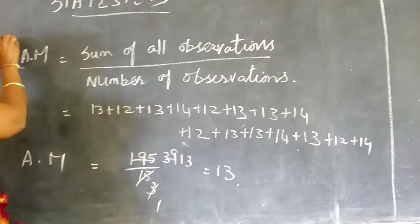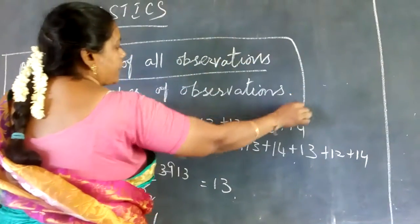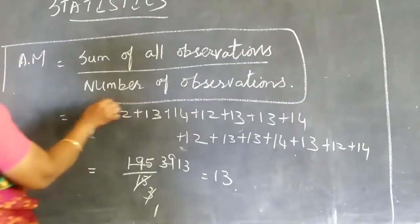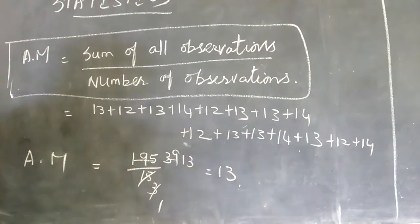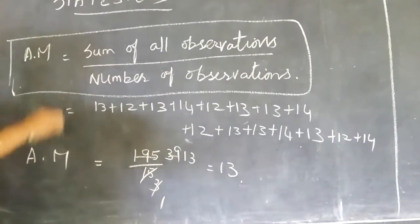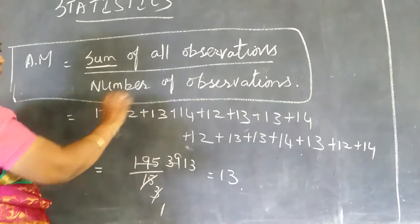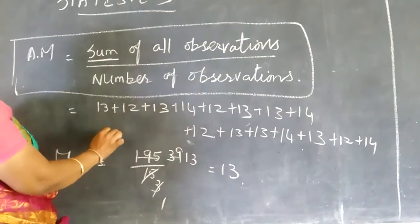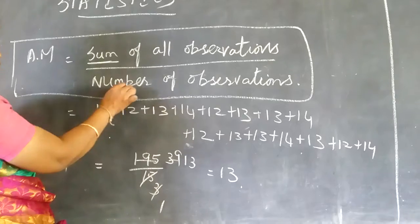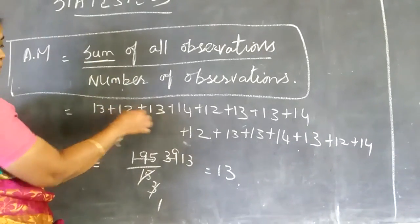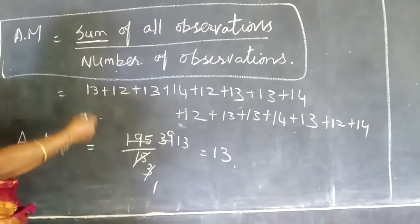First let us see what is the formula for the mean. Mean is nothing but the sum of all the observations divided by the number of observations. So you are going to add all the values and divide it by the number of values you have.